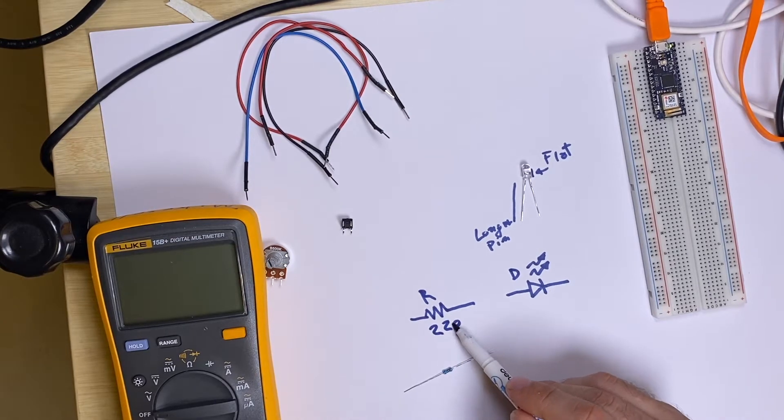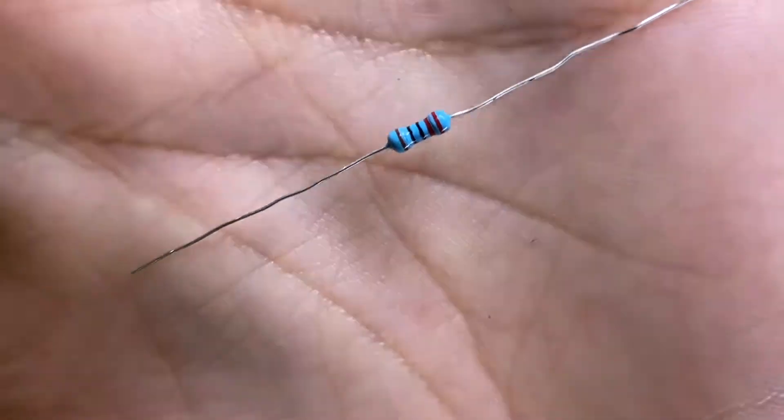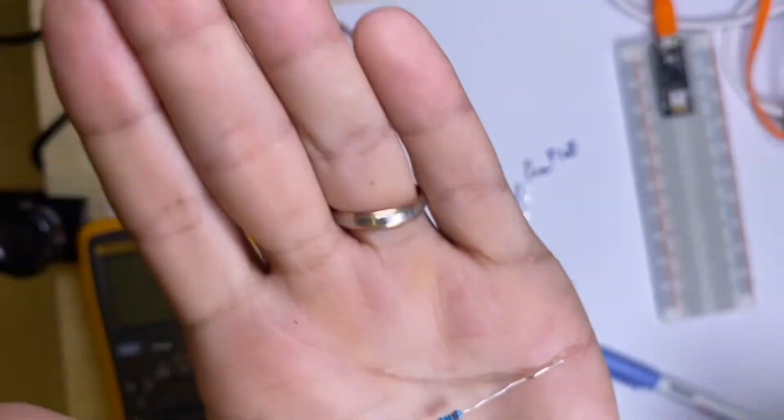The value of the resistance, maybe we'll use 220 ohms this time, but for an LED it could be between 100 and 1000 ohms. On the body of the resistor you'll notice it has some colors. That is a code to identify the resistor.